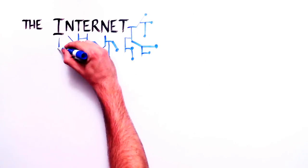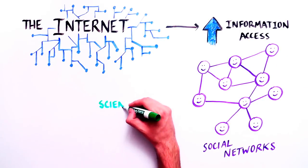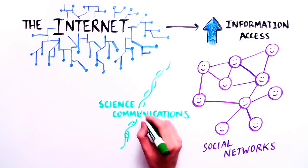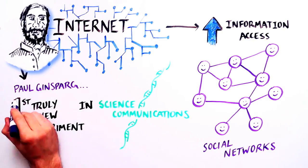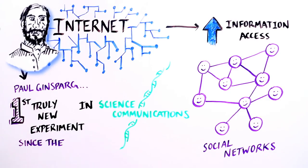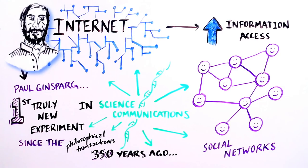The internet is continuing to redefine how people access information and create social networks. Using the internet, physicist Paul Ginsparg tried the first truly new experiment in scientific communication since the creation of the Philosophical Transactions 350 years ago.